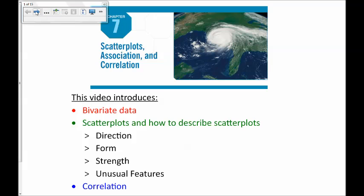This video is about Chapter 7, and in this chapter we will introduce bivariate data and display bivariate data using scatter plots. We will also talk about how to describe scatter plots by talking about the direction, form, strength, unusual features, and something called correlation.